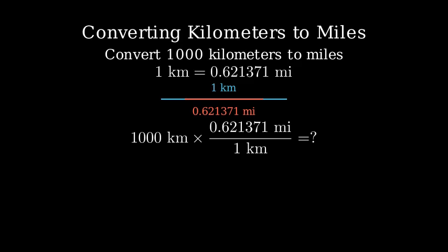The km units cancel out, leaving us with miles. Multiplying 1,000 by 0.621371 gives us 621.371 miles.